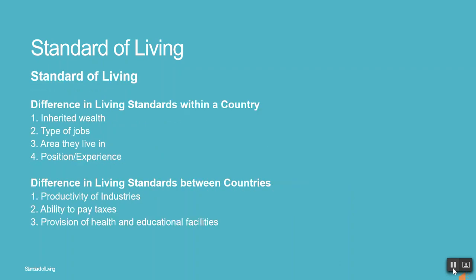Differences in living standards within a country are measured by: 1. Inherited wealth. 2. Type of jobs. 3. Area they live in. 4. Position and experience. Differences in living standards between countries are measured by: 1. Productivity of industries. 2. Ability to pay taxes. 3. Provision of health and educational facilities.